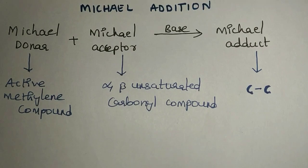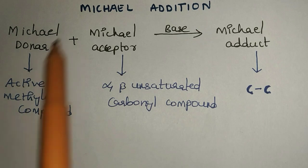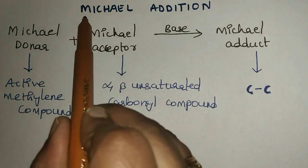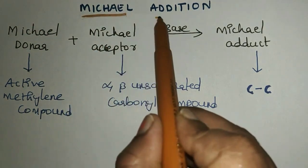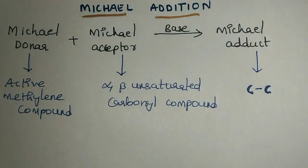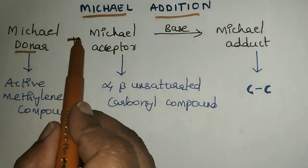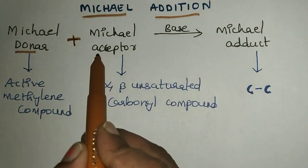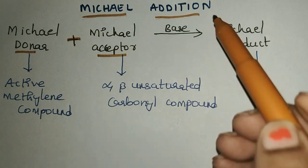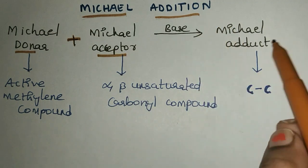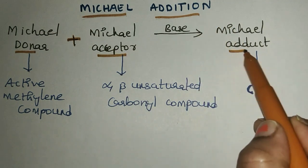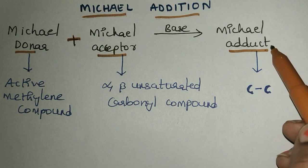Hi students, this is Ramya from PharmaTures. Today I'm going to explain the Michael addition. It is an addition reaction between a Michael donor and a Michael acceptor in the presence of a base to form a Michael adduct — adduct means addition product.